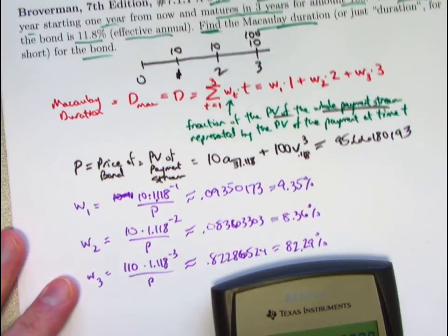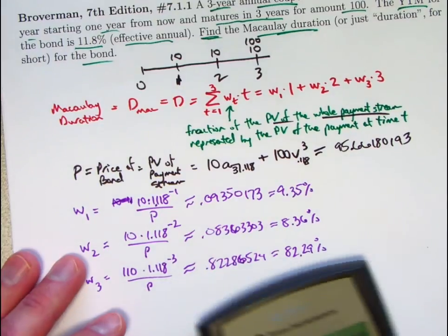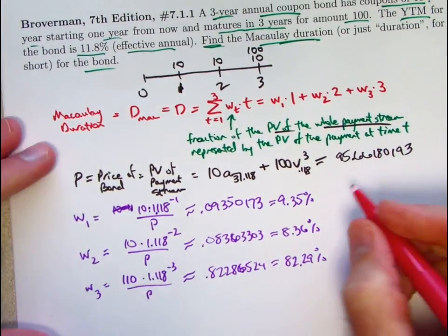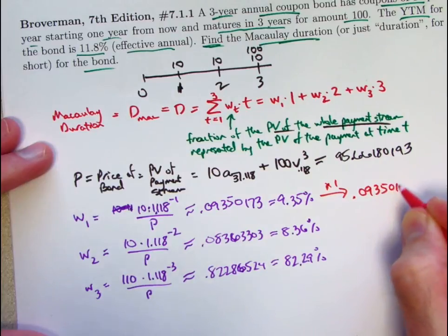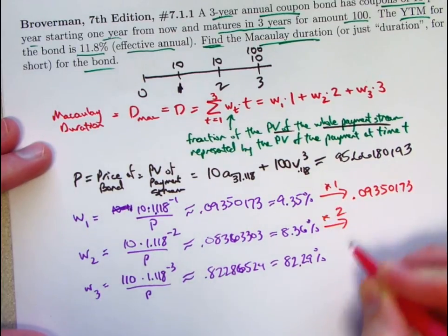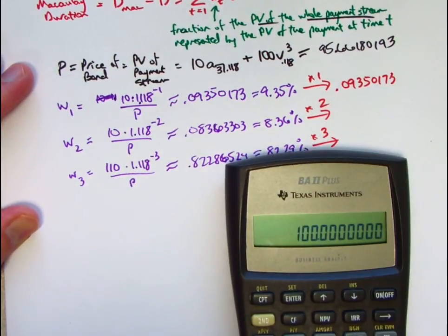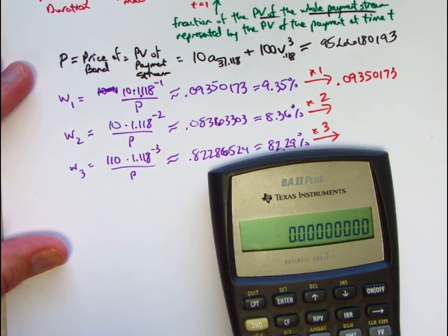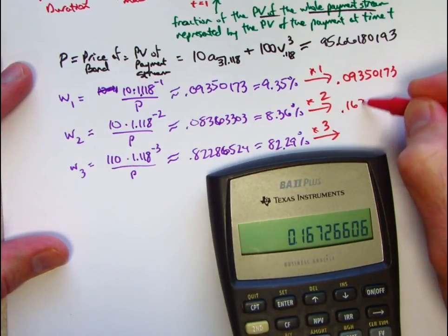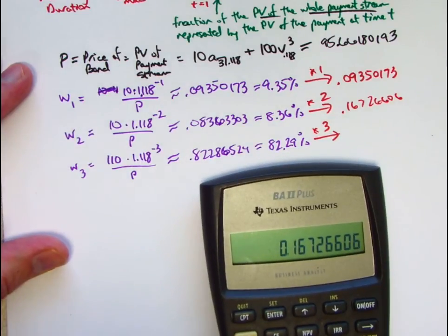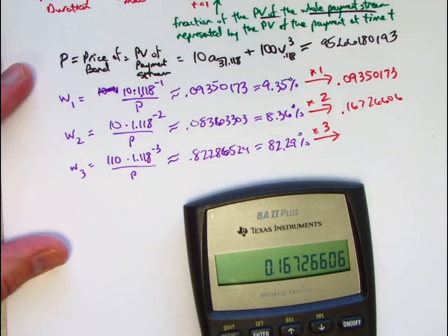Not quite done yet. Now go back to the formula. I've got to multiply this one by 1, this one by 2, and the final weight by 3. So of course, when you multiply W1 by 1, you get W1 itself. You get the same number, 0.09350173. This one gets multiplied by 2, and this one gets multiplied by 3. Let's go ahead and take W2, which is in register 2, and multiply it by 2. So that will give 0.16726606. I'll go ahead and store that in register 5, because 5 is above the 2. That will be probably the only thing I need to store here.